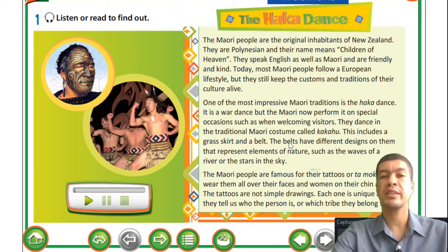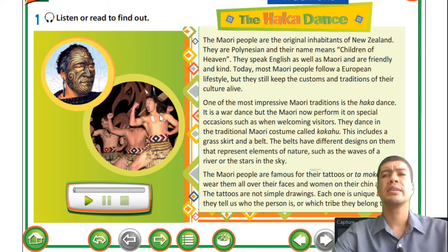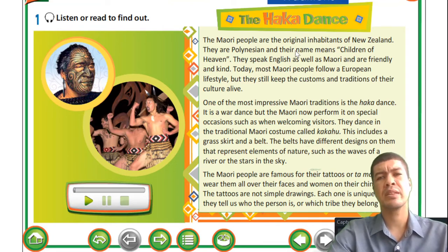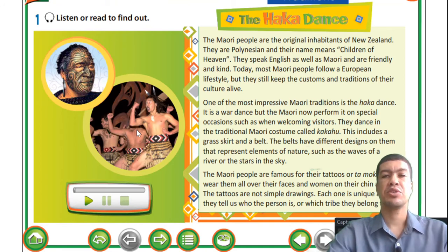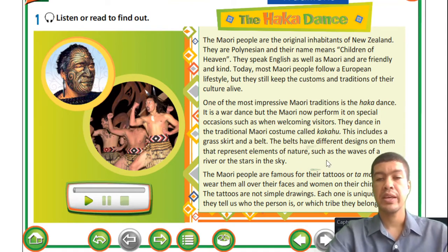One of the last things I want to bring your attention to is tamoko - these are the tattoos you see on their faces. Some of these guys don't have the tattoos on their faces but on their bodies you will see a number of tattoos. Most of you guys know Dwayne 'The Rock' Johnson, the famous actor - he is of Maori descent. You will notice that he also has a tattoo on his arm and chest, so he is quite familiar with the culture.